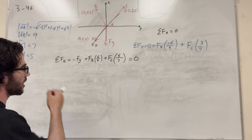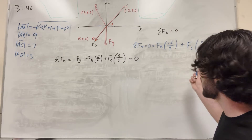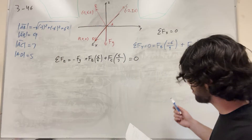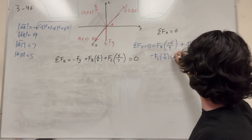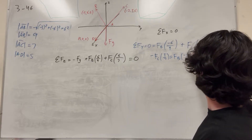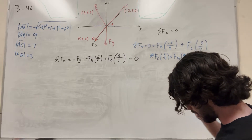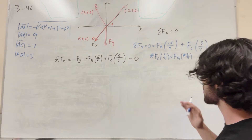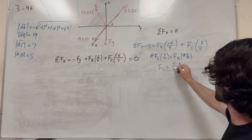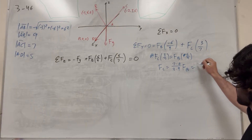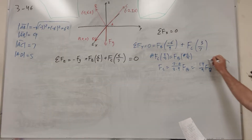From the y-direction equation, let's solve for force C in terms of force B. Moving force B's term over: force C times (three over seven) equals force B times (six over nine). Multiplying by seven and dividing by three gives: force C equals seven times six over three times nine times force B, which simplifies to fourteen over nine times force B. So force C equals (14/9) force B — a useful ratio.